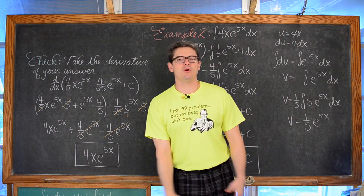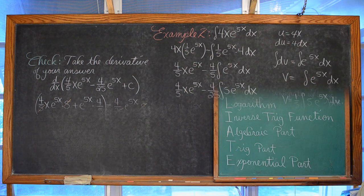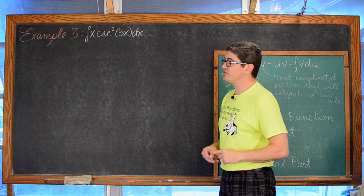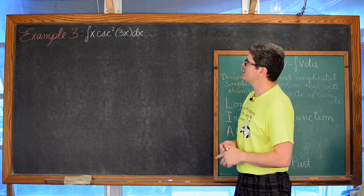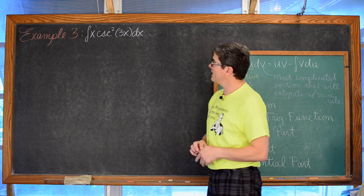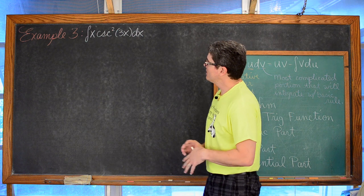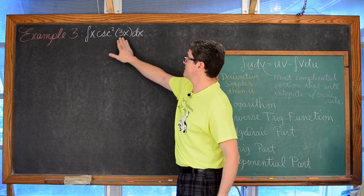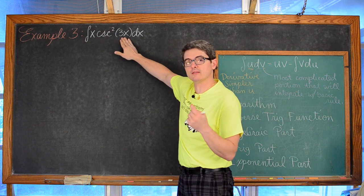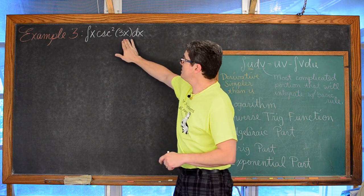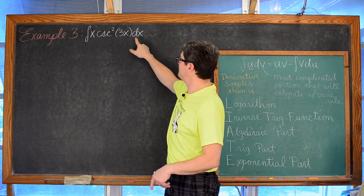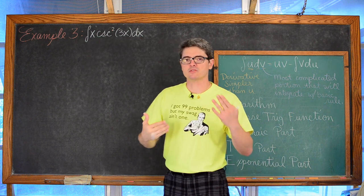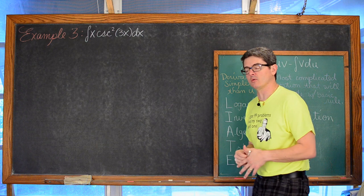For our third example, we have the indefinite integral of x times cosecant squared of 3x dx. Checking first: can we just do a simple u-substitution? If we let the inside function 3x be u, then du is simply 3 dx, but we do have that extra factor of x, so we are going to need to attempt to do this with integration by parts.